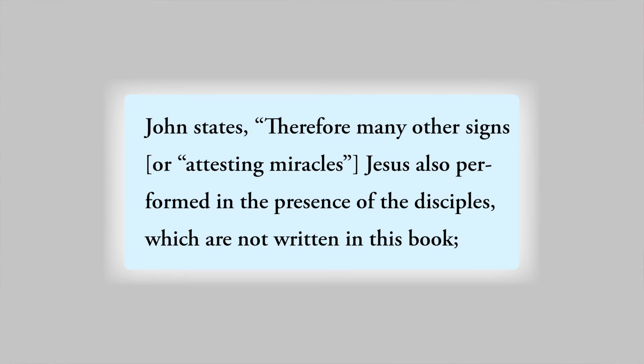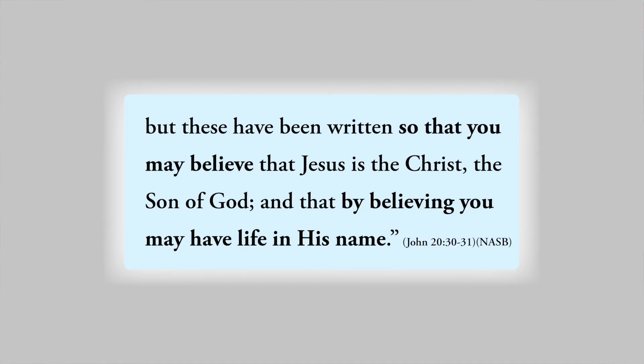So why did John write this book? He actually says it plainly in John 20:30-31, which states: 'Therefore, many other signs Jesus also performed in the presence of the disciples which are not written in this book, but these have been written so that you may believe that Jesus is the Christ, the Son of God, and that by believing you may have life in his name.' The Book of John is broken up into two main sections: chapters 1-11, describing his public ministry, and chapters 12-21, describing his private ministry to his disciples and to those who would believe in him.